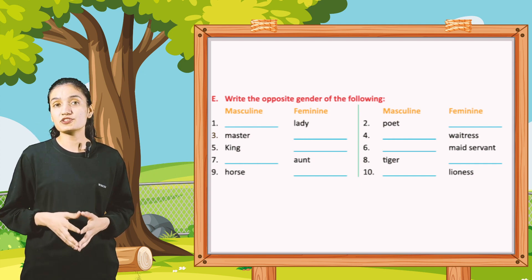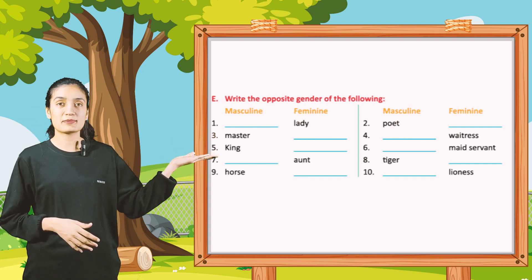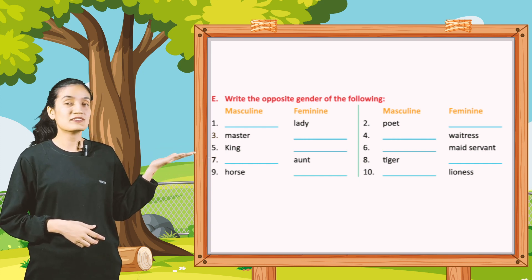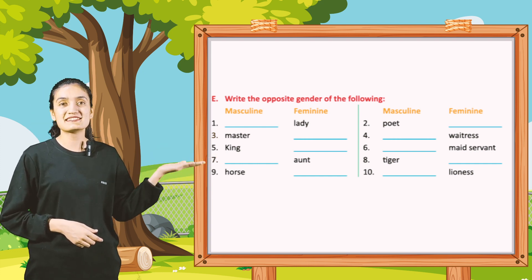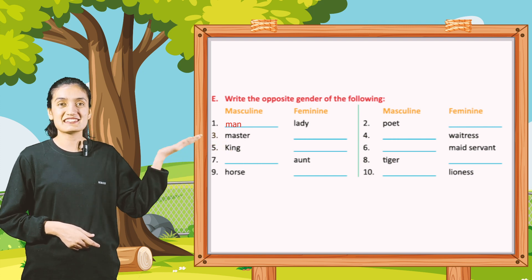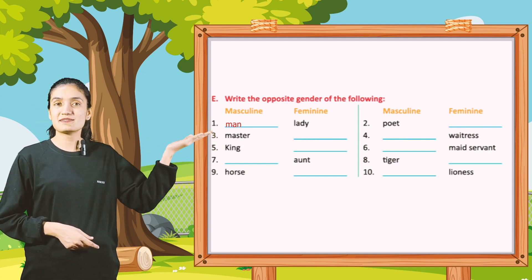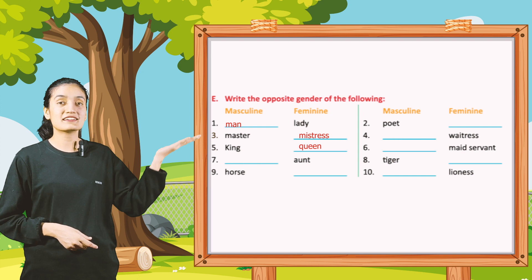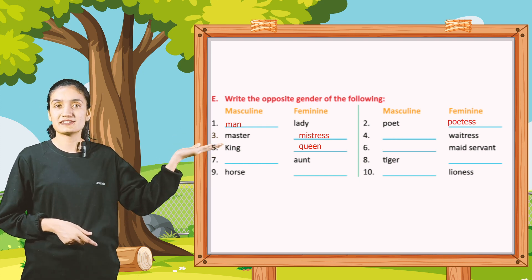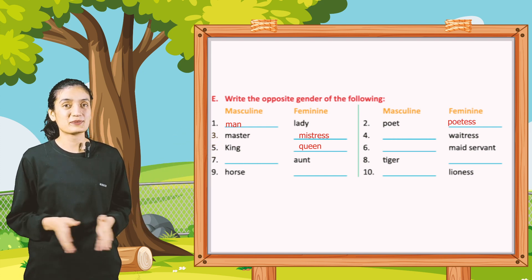Part 2: write the opposite gender of the following — masculine and feminine. In masculine, number 1, you will write man; its feminine is lady. Master — mistress. King — queen. Poet — poetess. In this way, do the rest by your own.